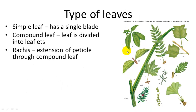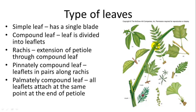Looking at types of leaves: a simple leaf has just one leaf on one petiole. A compound leaf has one petiole but many leaflets. In a compound leaf, the extension of the petiole is called the rachis. You can have a pinnately compound leaf, where the leaflets are arranged in pairs, or a palmately compound leaf, where all the leaflets come out from one single point.